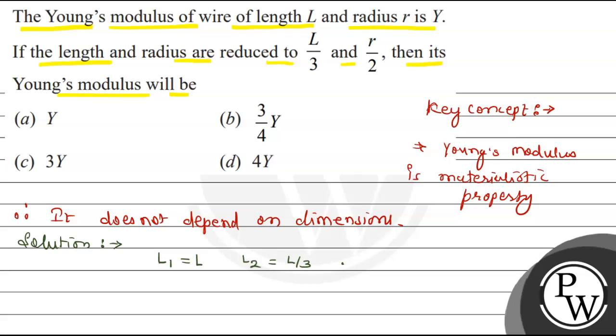Similarly, in the first case, radius R1 is equal to R. And in the second case, R2 is equal to R by 2.